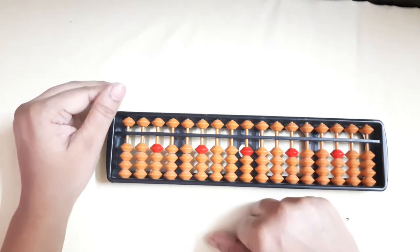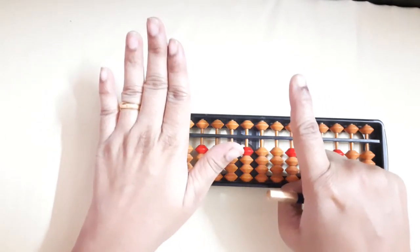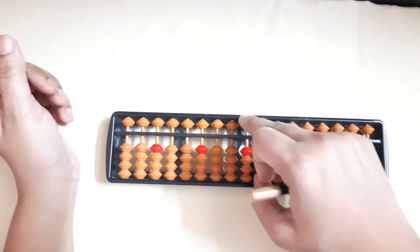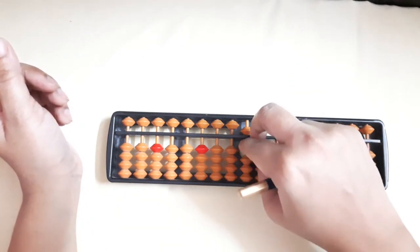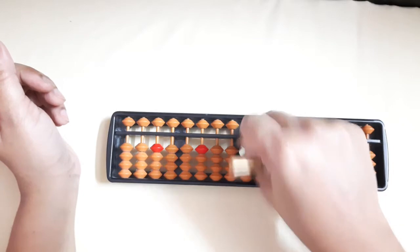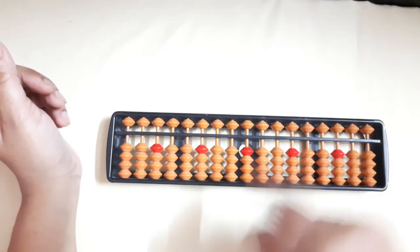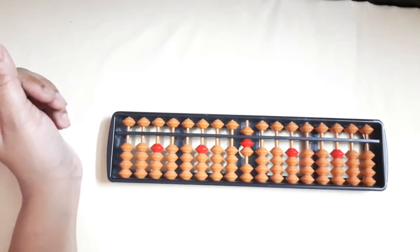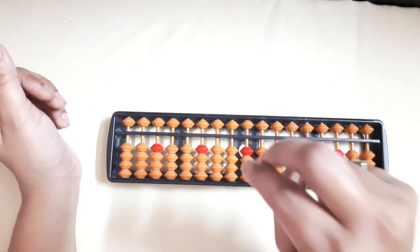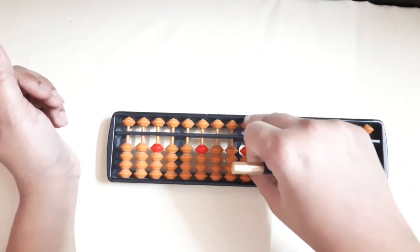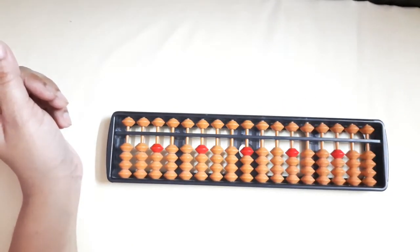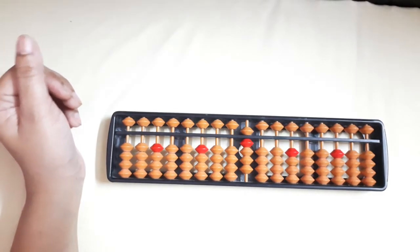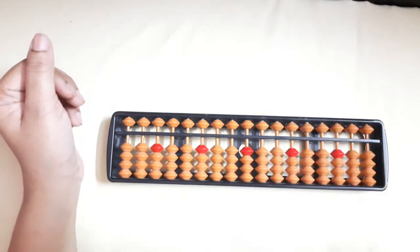Now 6. How will make 6? 5 and 1 make 6. So here, 5 and 1, 6. It should be a 1 sound like this, 6. Then 7. Minus 7. 8. Minus 8, 5 and 4. 9. Minus 9.